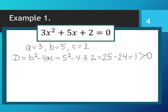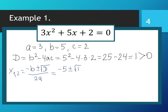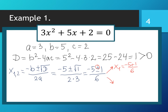So our quadratic equation has two different roots, found using the formula x₁,₂ = (-b ± √D) / 2a. With b = 5, it would be (-5 ± √1) / (2 × 3). Since √1 = 1, for x₁ we take the plus: (-5 + 1) / 6. For x₂ we take the minus: (-5 - 1) / 6.